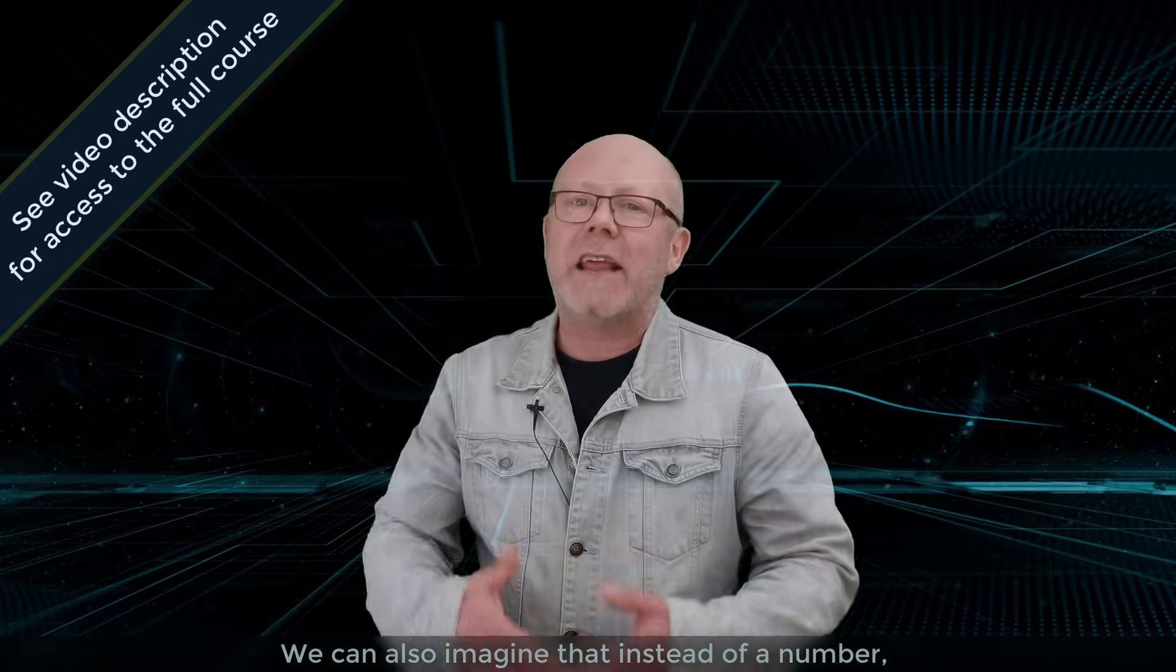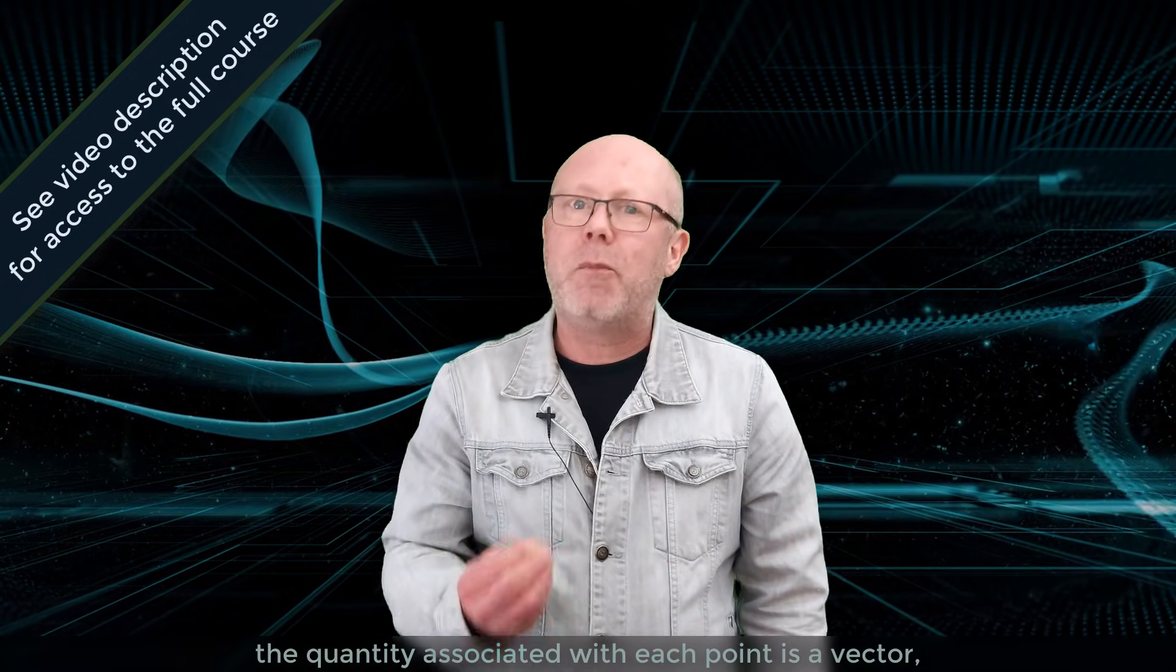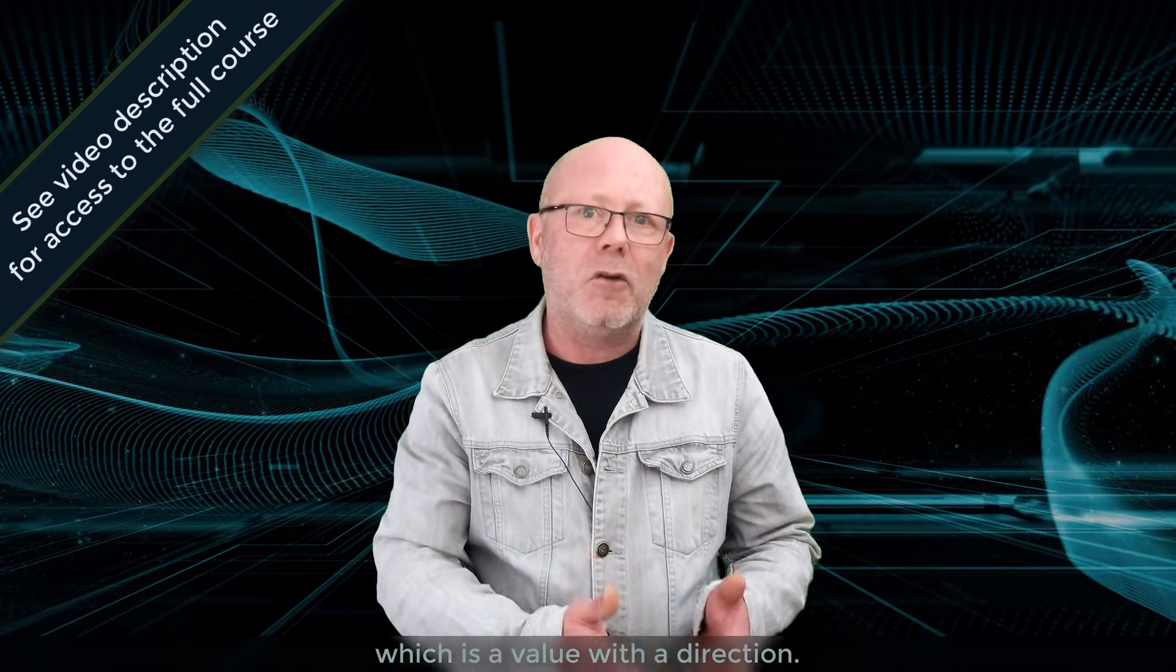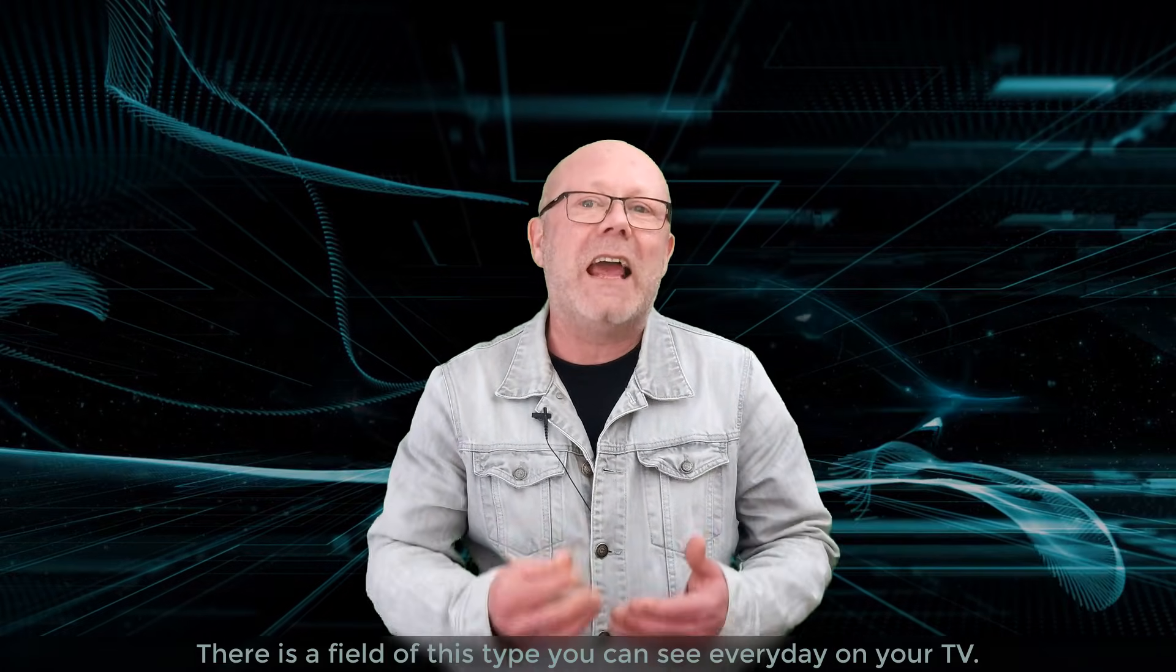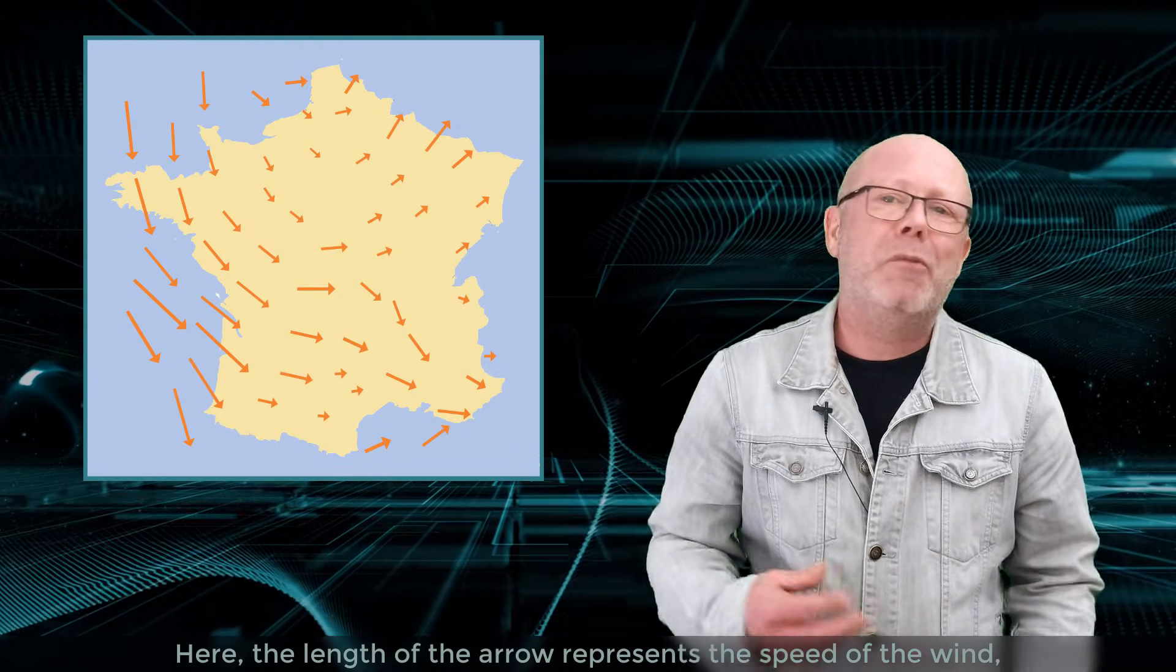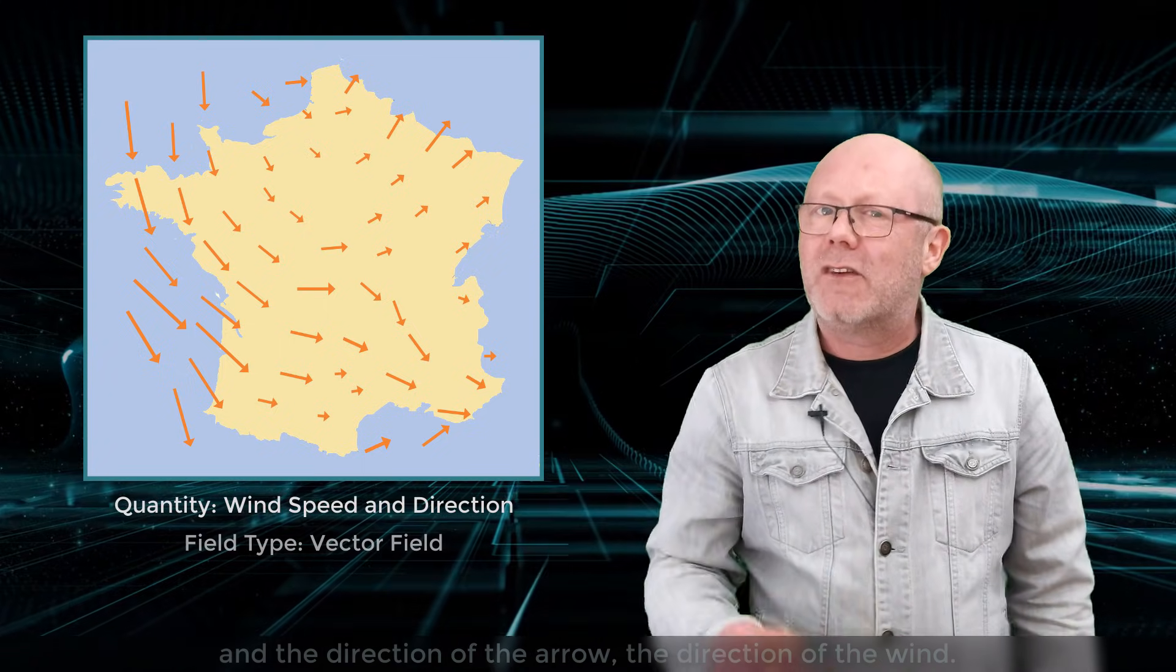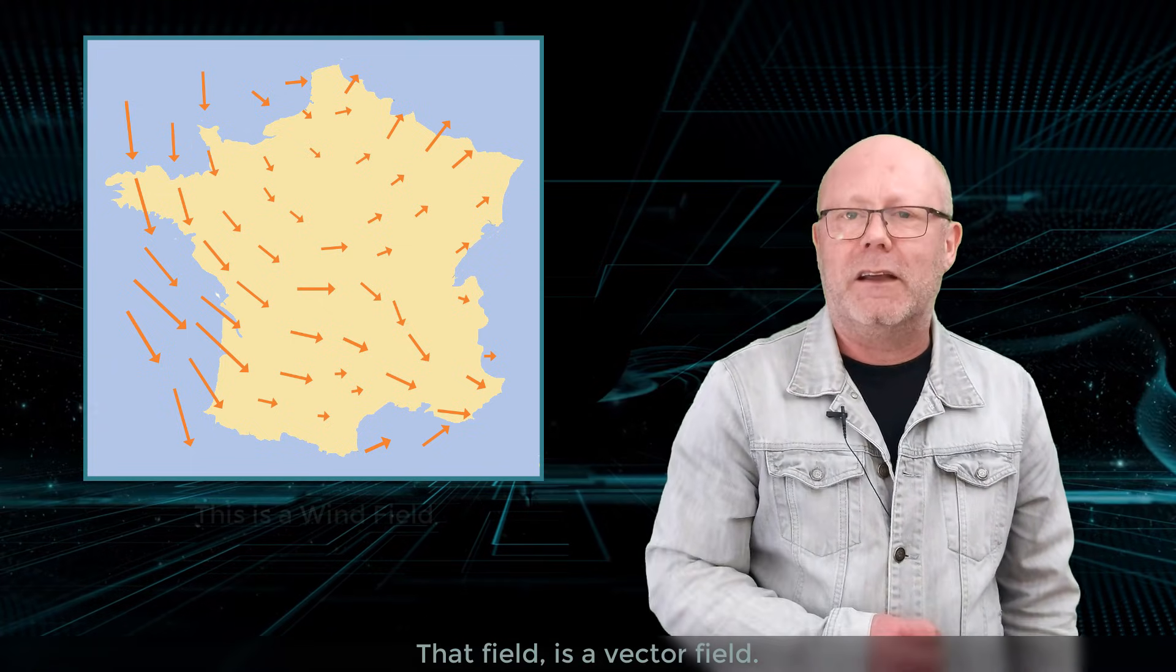We can also imagine that instead of a number, the quantity associated with each point is a vector, which is a value with a direction. There is a field of this type you can see every day on your TV. This one. Here, the magnitude of the arrow represents the speed of the wind, and the direction of the arrow the direction of the wind. That field is a vector field.